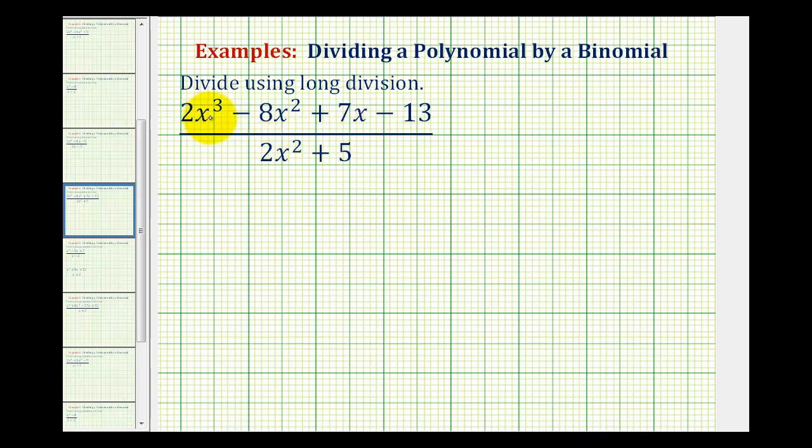We want to divide this degree three polynomial by this degree two binomial. And since a fraction bar represents division, we can write this as 2x³ - 8x² + 7x + 13 divided by 2x² + 5.